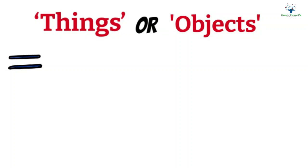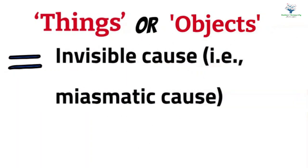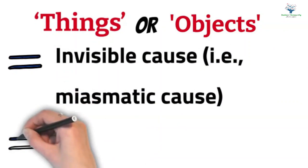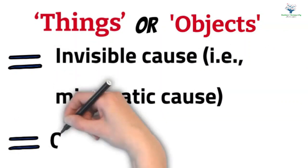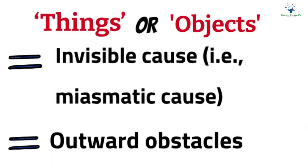Then what does Hahnemann mean by saying the things? He means by this the invisible cause, that is the miasmatic cause. Apart from this there are some outward obstacles. These outward obstacles aggravate the chronic miasms and make one more susceptible to acute miasms.